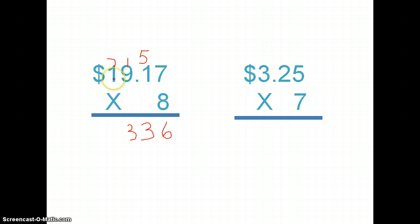And then eight times one is eight, plus seven is fifteen. I'm just going to write that fifteen down because that's the last number I need to multiply by. Now, I count two decimal places to the left. I go one and two. I put my decimal point, and then I add my dollar sign.